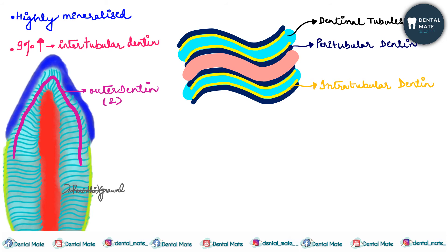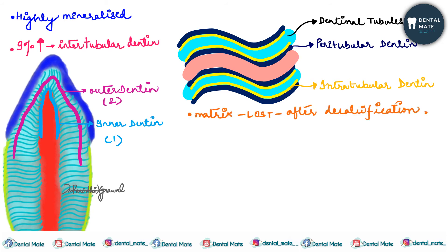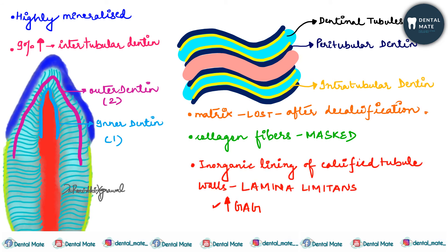The thickness of peritubular dentine is twice in the outer dentine compared to the inner dentine — a 2:1 ratio for peritubular dentine thickness at the outer versus inner surface. The matrix of peritubular dentine is lost after decalcification, and collagen fibers in the tubules are masked. The inner organic lining of the calcified tubule wall is known as lamina limitans. It has high glycosaminoglycan content and is similar to the lining of lacunae in bone.